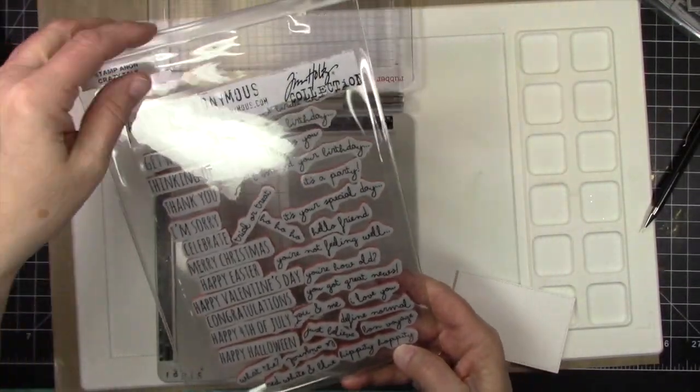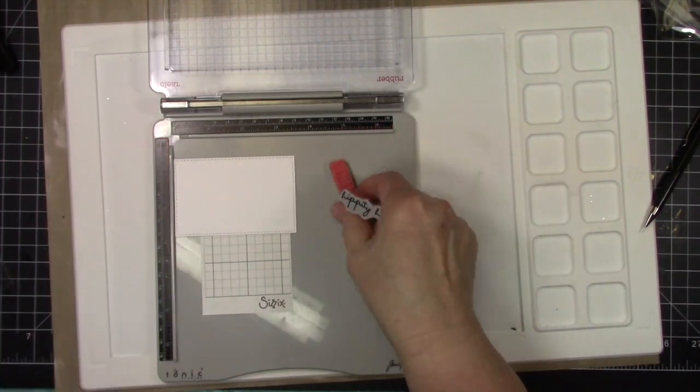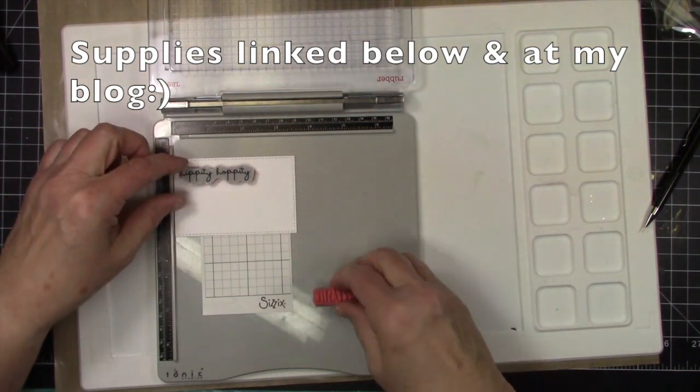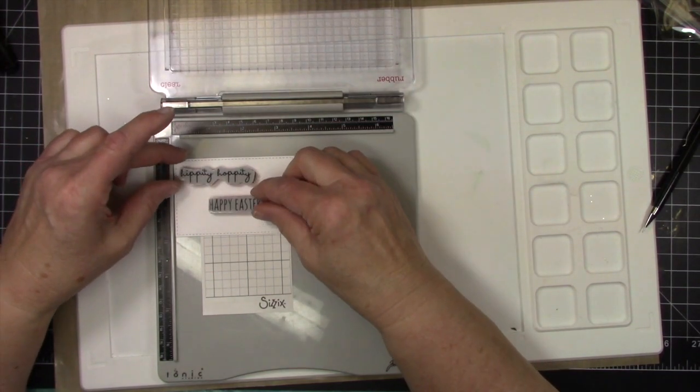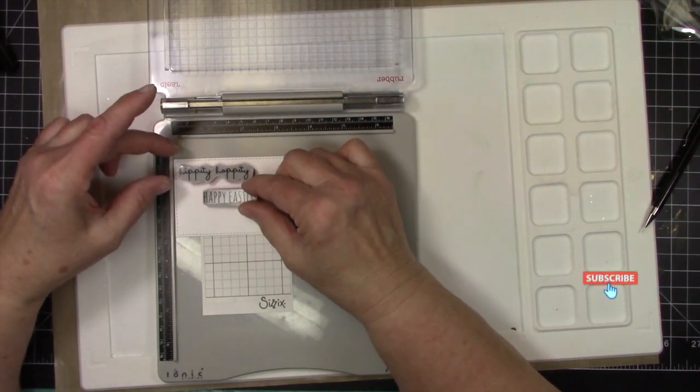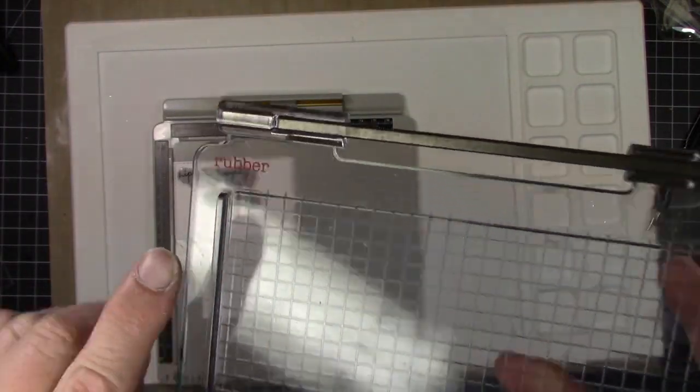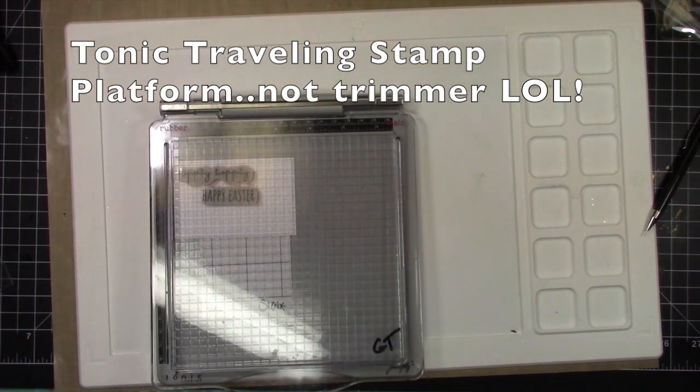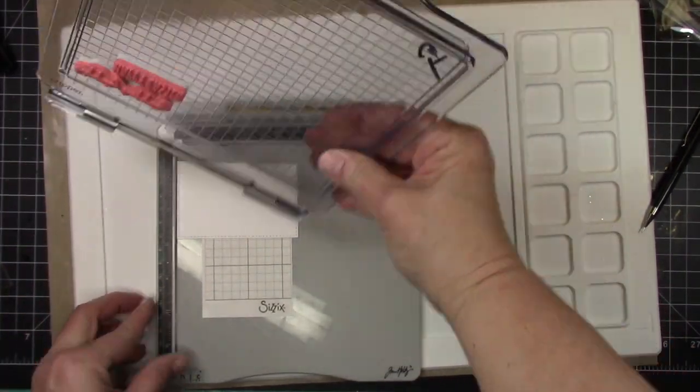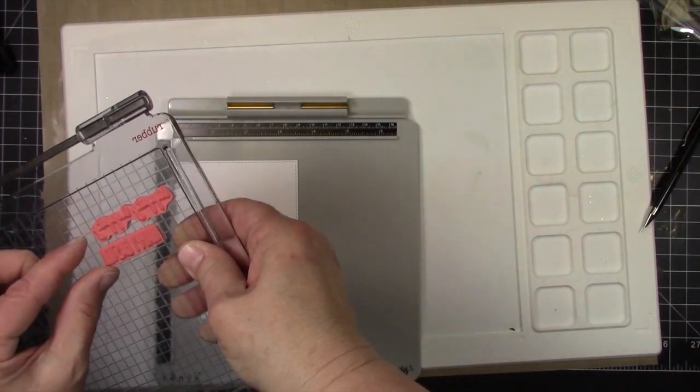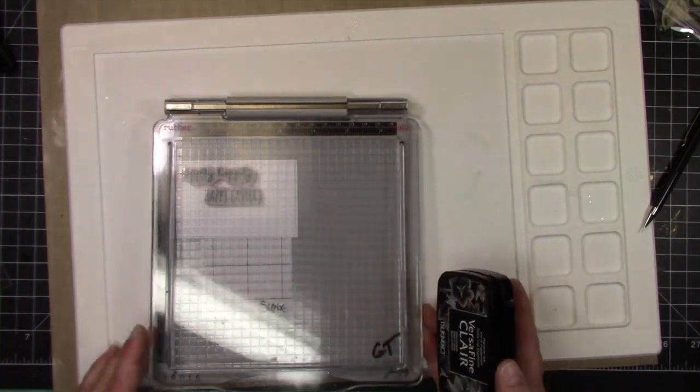Now I'm using some sentiments from Stampers Anonymous. I've been watching Tim Holtz and I'm trying some different things. I'm going a little grunge and I hadn't had a chance to use this set much so I'm just going to put the hippity hoppity happy Easter. And that is on a Tonic trimmer and it's on the rubber setting because he uses rubber stamps.